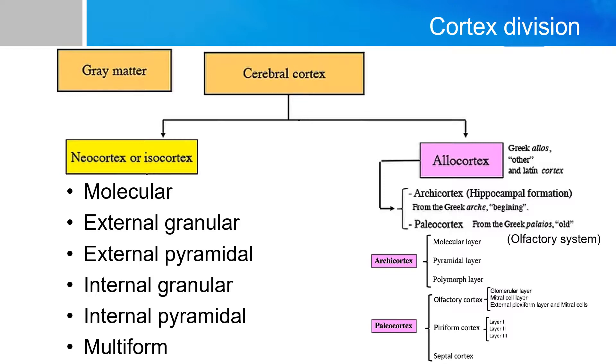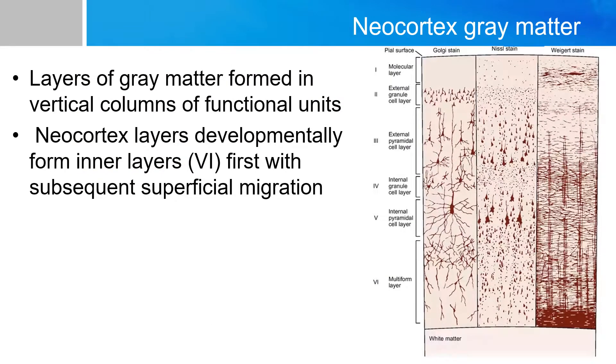Now these two systems will be covered in other videos. Now the neocortex gray matters are formed in vertical columns, and they're known as functional units. Embryologically, they're developed from the inner layers, which is the layer six, first with subsequent superficial migrations into layer one.